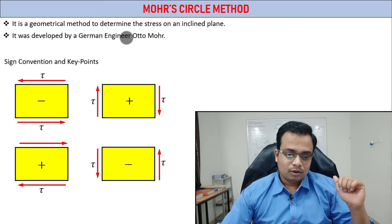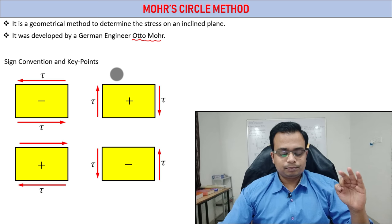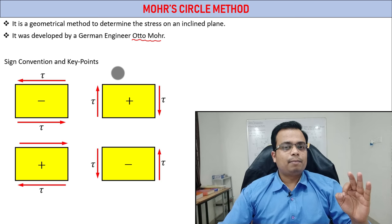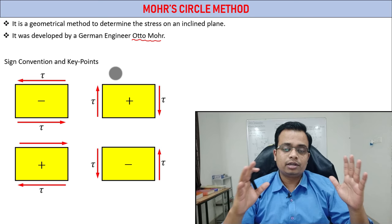The name of that fellow is a German engineer Otto Mohr, and this method is known as the Mohr's Circle method. The objective of this method is to help you find the value of sigma_t and sigma_n, find the position of the principal plane, find the position of the maximum shear plane, and find the value of maximum shear stress — all completely with the help of one single diagram known as the Mohr's Circle diagram.